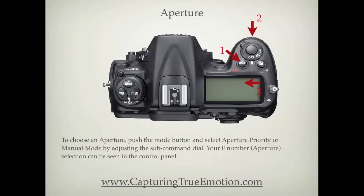To choose an aperture, push the mode button and select aperture priority or manual mode by adjusting the sub command dial. Your aperture selection can be seen in the control panel.